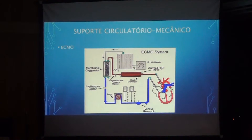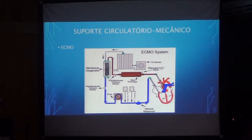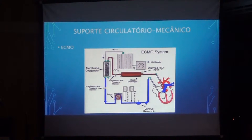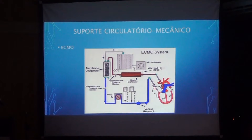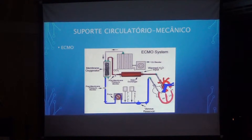The ECMO does not provide only circulatory assistance — it also provides respiratory and ventilatory support. In these patients, you cannulate a vessel or vein, divert the flow through the pump and oxygenator, and return the oxygenated flow to the patient's artery. It can be via left-side or ventricular cannulation. ECMO can be peripheral or centrally implanted, as in open cardiac surgery.